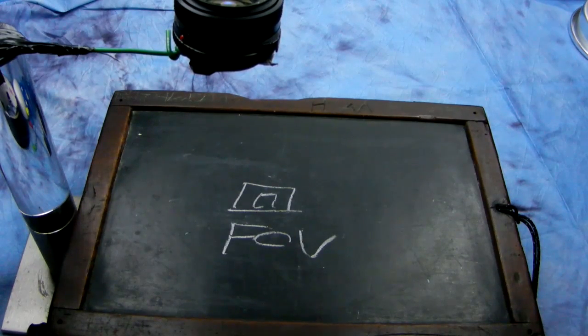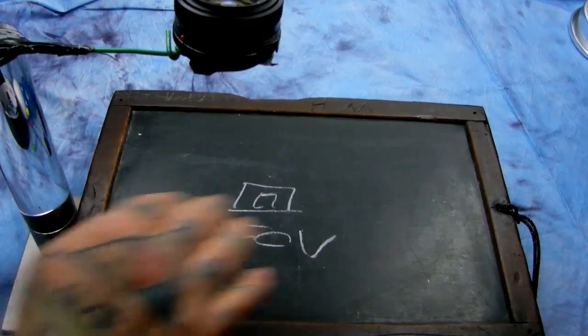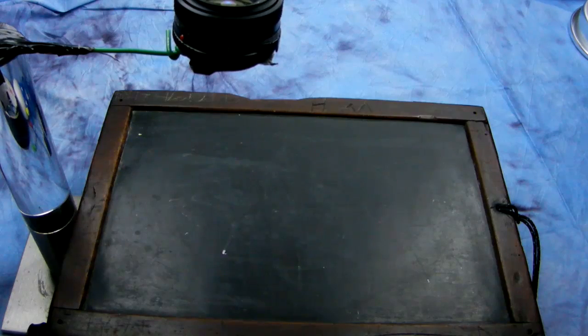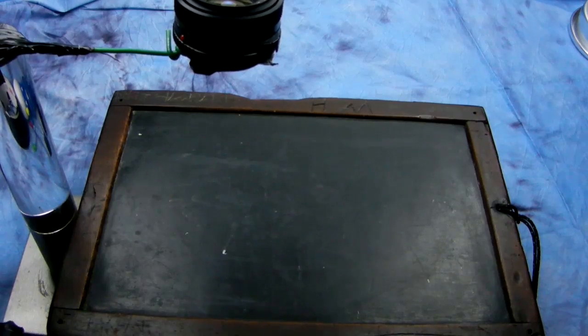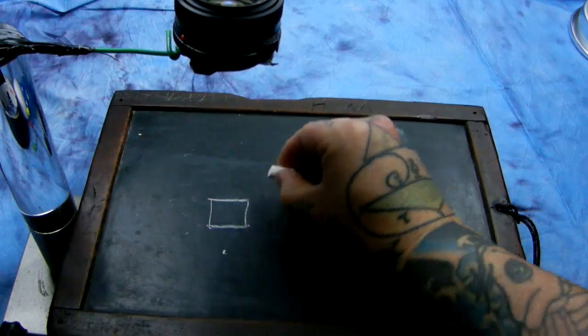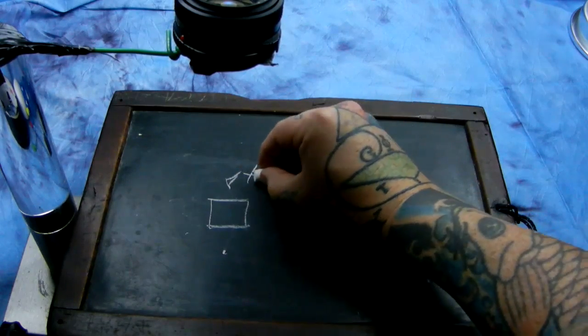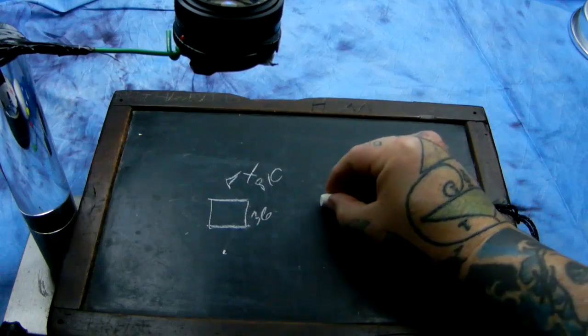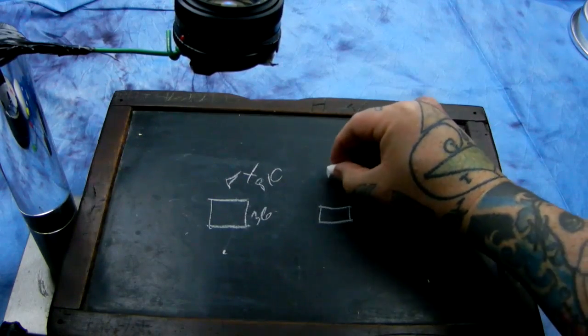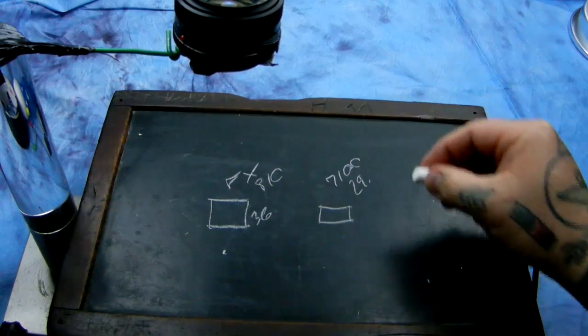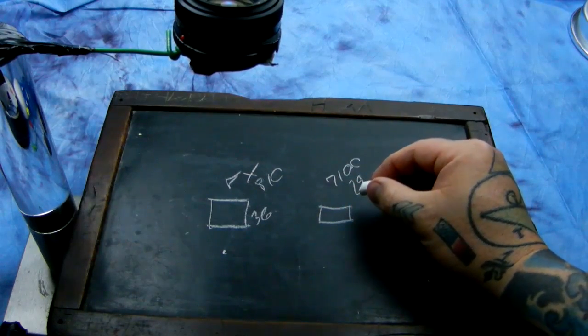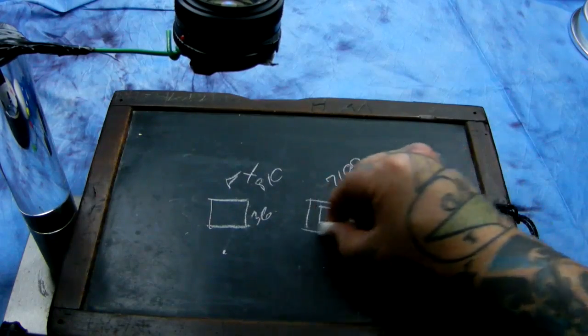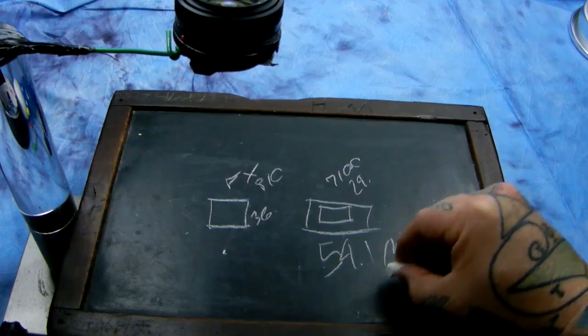Now, the D7100, of course, wherever my chalk went to, has a much higher pixel density than does that of the D810. Here went my chalk. If, now let's just say this is the FX D810, 36 megapixels, and this is the D7100, 24.1 megapixels. If the D7100 in pixel density were scaled up to the FX sensor, it would be a 54.1 megapixel sensor.